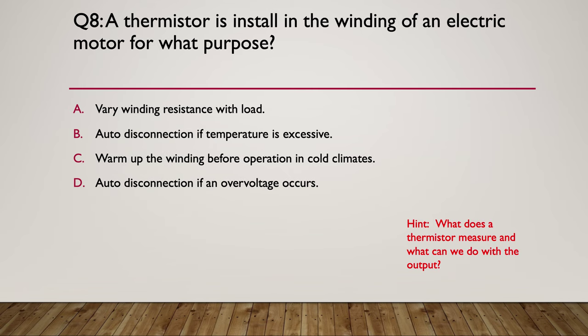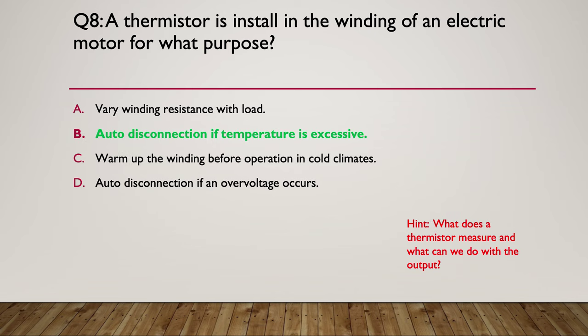Here's your hint: what does a thermistor measure, and what could you do with that measurement to produce some kind of output? The answer is B: auto disconnection if temperature is excessive. The thermistor measures the temperature in the winding — if it gets too high and might cause the winding to fail, it signals the outside world and electronically disconnects the motor.